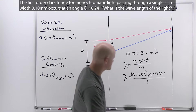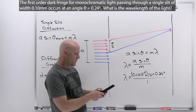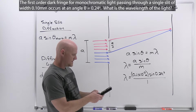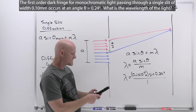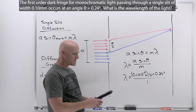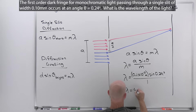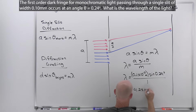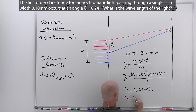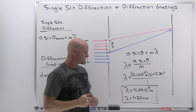Plugging in 0.1e negative 3 times the sine of 0.24 degrees, it comes out to 4.188 times 10 to the negative 7 meters, which to 2 sig figs is 4.2 times 10 to the negative 7 meters — or 420 nanometers, which corresponds toward the violet end of the spectrum.